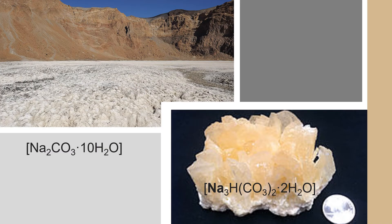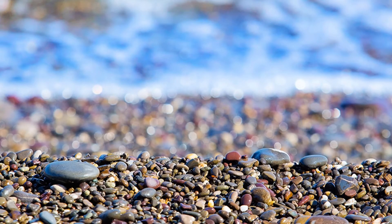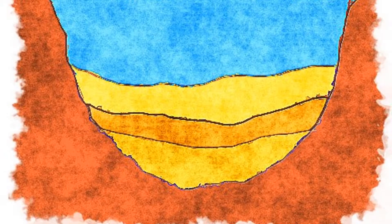Here is what natron and trona look like. Natron is on the left and trona is on the right. They are both evaporite minerals. Types of sediment among lakes vary based on geology of bedrock, weathering of nearby rocks, lake chemical compositions, and whether they support life or not. These sediment layers among lakes consist of biogenous, lithogenous, and hydrogenous sediment.